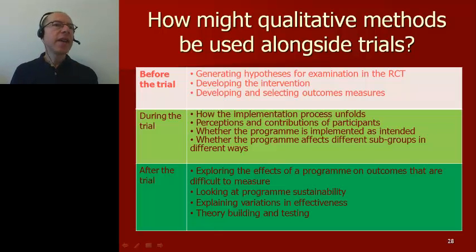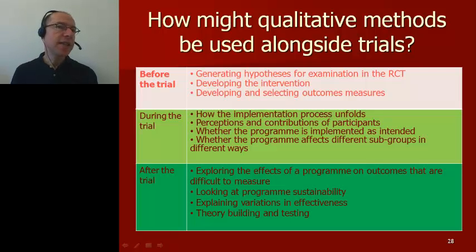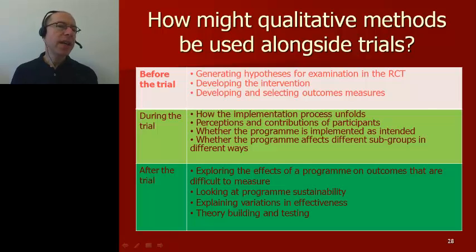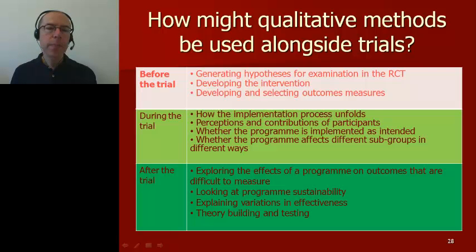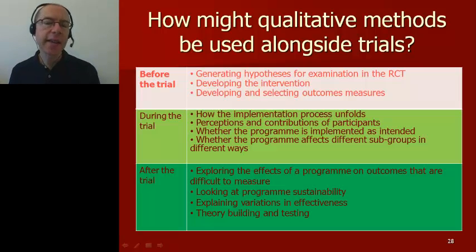For example, many trials of interventions to improve back pain have measured outcomes not considered important to patients. Patients may value outcomes such as the ability to do day-to-day activities — going shopping or walking to a friend — whereas clinicians may value degree of movement or quantitative evaluations of pain. Qualitative methods can help identify outcomes valued by both clinicians and health service users.